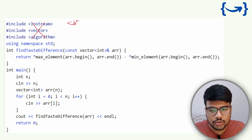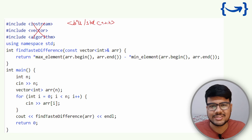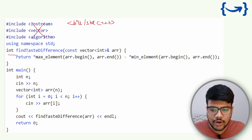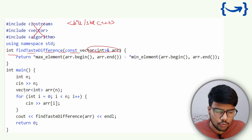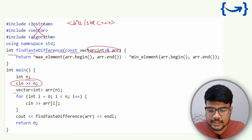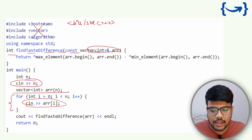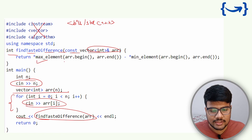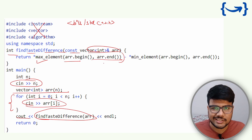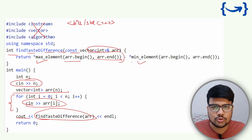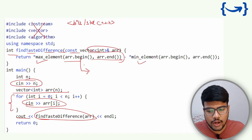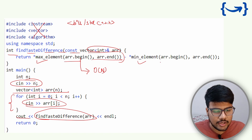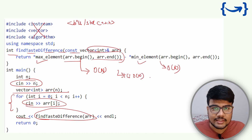From candidates who appeared for Capgemini and got placed, you can use the `bits/stdc++.h` library and any STL you want. The function `int findTasteDifference(const vector)` takes the array. In main, take N as input, create the array, fill it with a for loop, then call the function. Inside, `*max_element(array.begin(), array.end())` gives the max and `*min_element(array.begin(), array.end())` gives the min. Return their difference. This runs in O(N) time, more efficient than O(N log N).